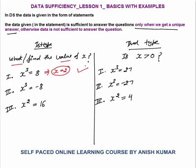If x³ = −8, then x = −2 because (−2)³ = −8. The question was 'what is the value of x?' — again we got a unique answer, so this statement is also sufficient. Now if x² = 16, x could be +4 or −4, since both (+4)² and (−4)² equal 16. The question asks for the value of x but we get two possible values — we are not getting a unique answer, so this third statement is not sufficient.